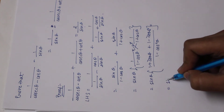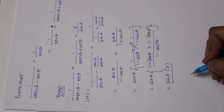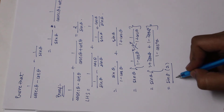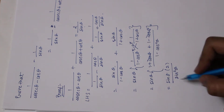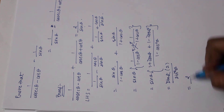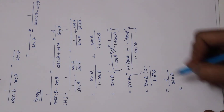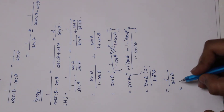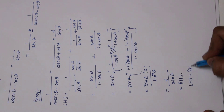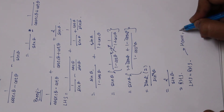The cos theta terms cancel, so we are left with sin theta multiplied by 2, divided by 1 minus cos squared theta. But 1 minus cos squared theta can be written as sin squared theta. So sin theta and one power of sin cancel, and I'm left with 2 upon sin theta — which is exactly what I required on my RHS. So I have proved LHS equals RHS, hence proved.